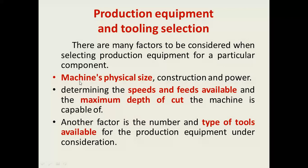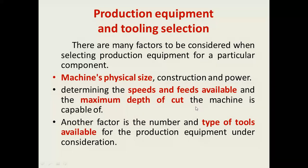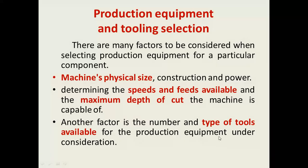The first factor is the machine physical size. Next, determine the speeds and feeds available and the maximum depth of cut the machine is capable of. Factor number three is the number and type of tools available for the production equipment under consideration. These are the key factors while selecting production equipment.